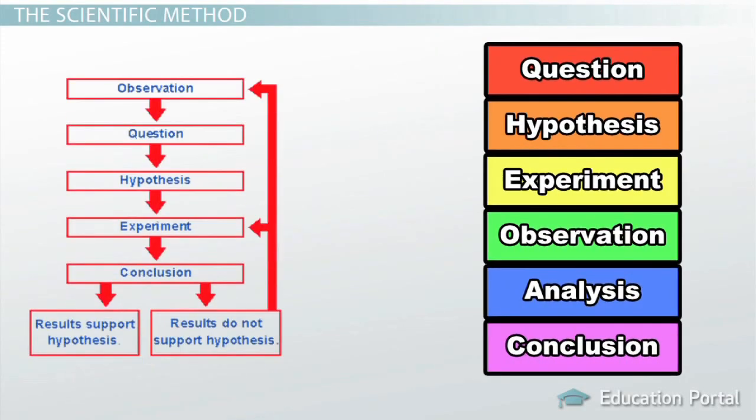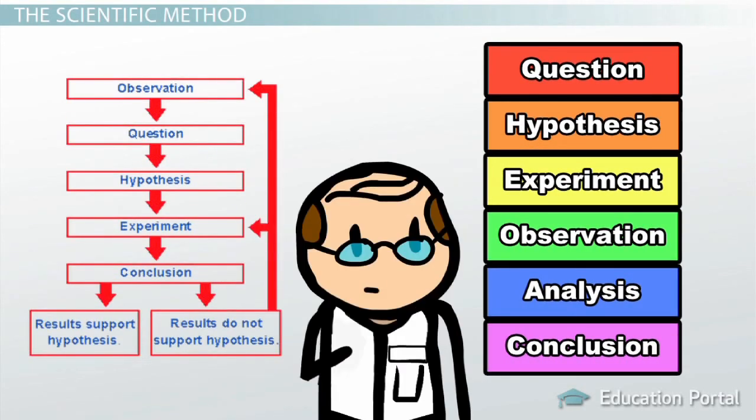Although the specific steps of the scientific method can vary by discipline, it is widely agreed upon that the fundamental elements of the scientific method include five steps.